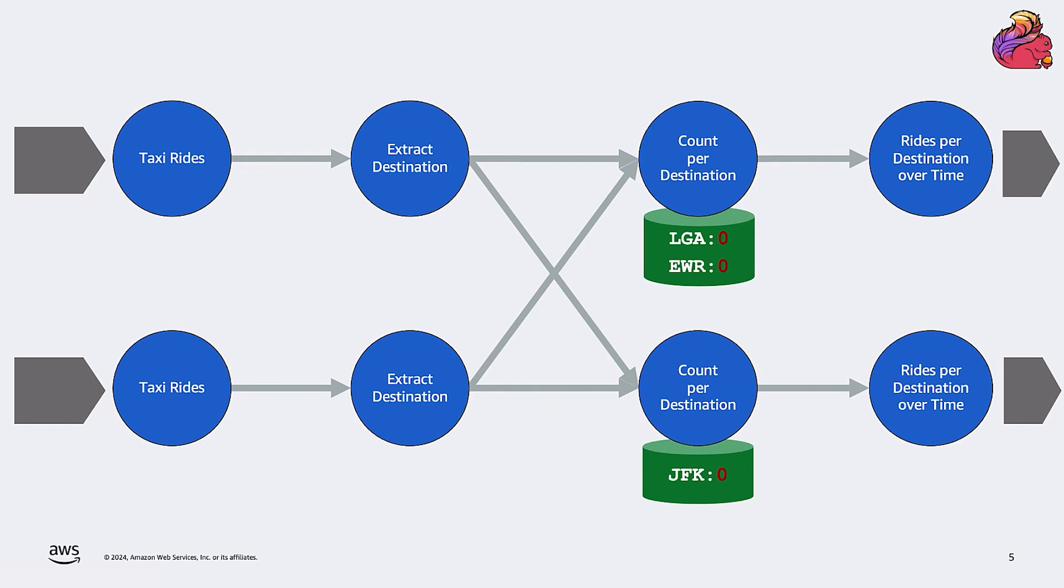If Flink worked this way, it would not be able to provide any guarantees of correctness. But we know that Flink promises exactly once semantics, or more precisely, exactly once state consistency guarantees. The promise is that each trip is never counted twice or not counted, even in case of failure or application restart or redeployment. So how does Flink provide these guarantees?